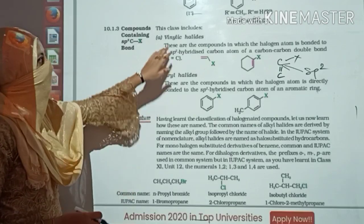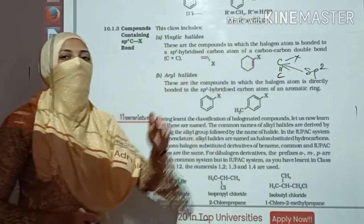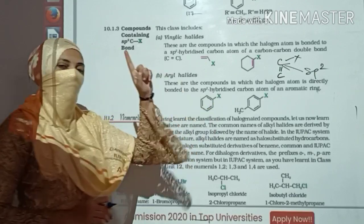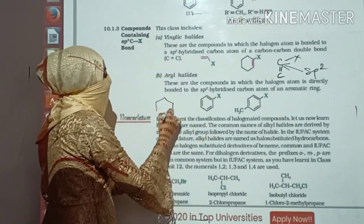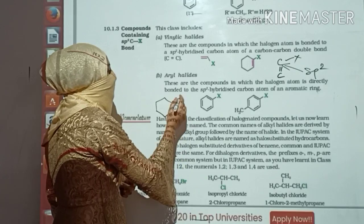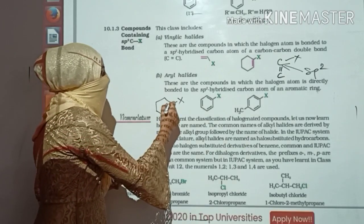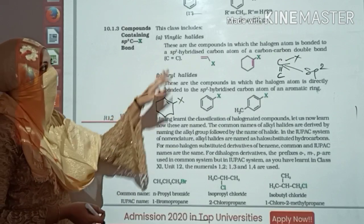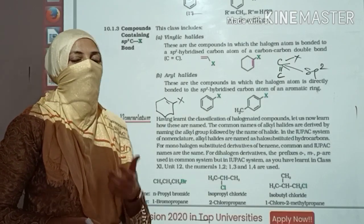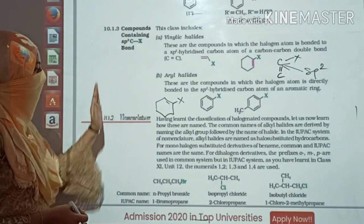That is what we have to study. First structure: vinylic halide — we have a single X connected to a carbon which is directly involved in double bond formation. Then we have aryl halides. In aryl halides, we connect the halogen directly to the carbon of the benzene ring, which is involved in double bond formation. In both examples, your halogen is directly connected to the carbon having the double bond — that is your SP2 hybridized compound. These two types of compound formations are very important to remember.